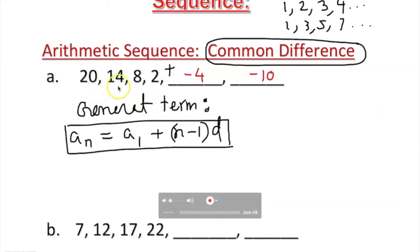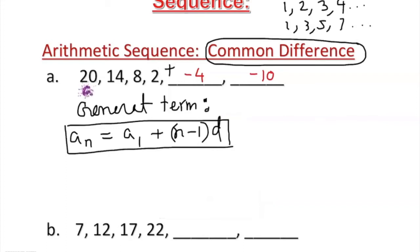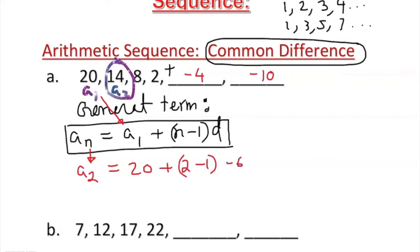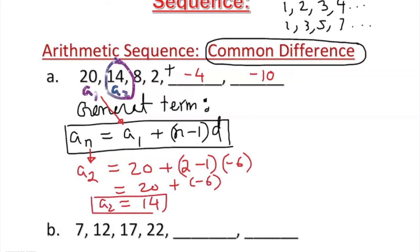Let's check this with our sequence. I want to find a sub 2. Here, a1 is 20, so a2 equals 20 plus (2 minus 1) times negative 6, which equals 20 plus negative 6, which is 14. So a2 equals 14 — it works! If you try to find any other term it will still work. This is called the general term of an arithmetic sequence.